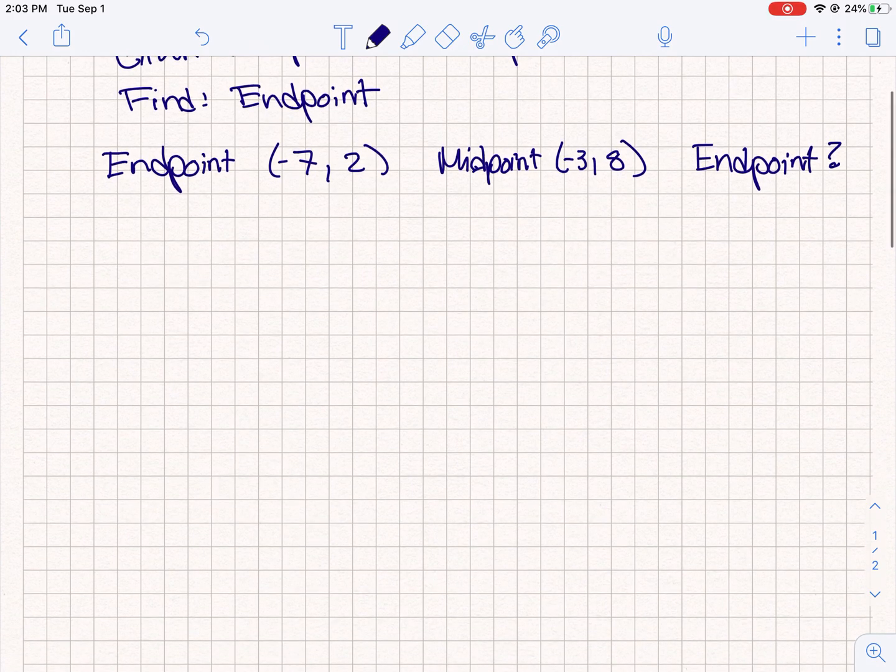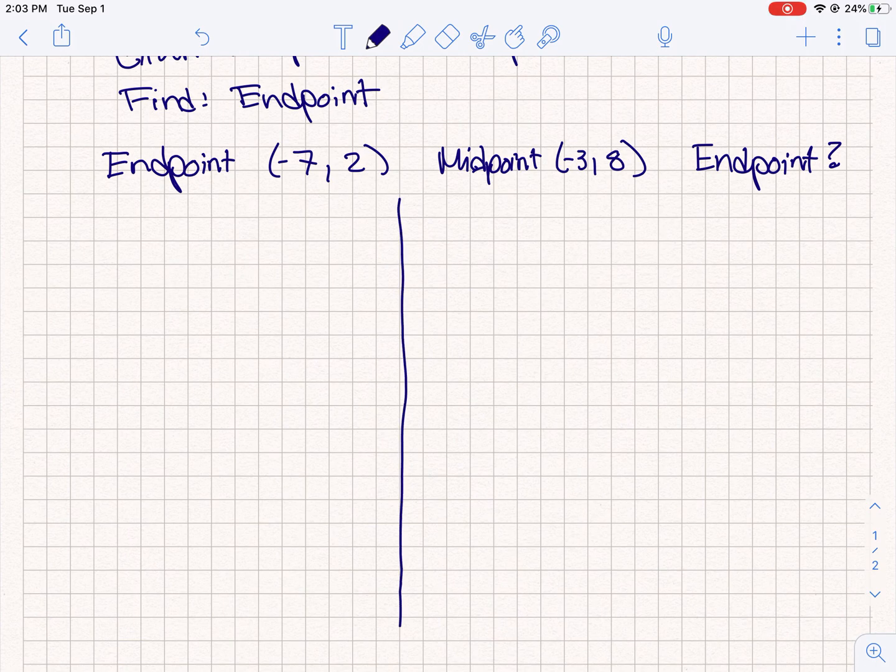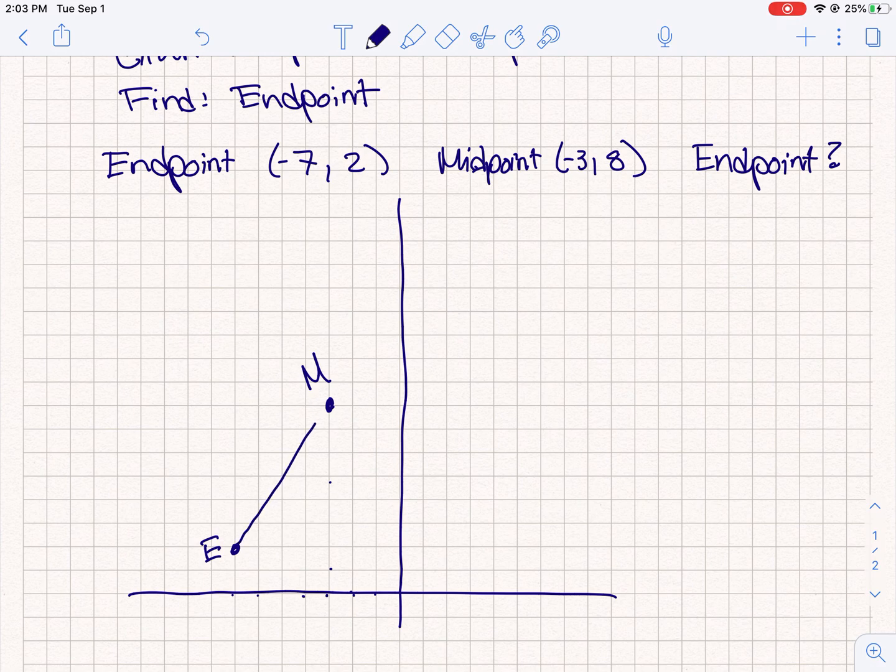So to start with, I'm going to graph this problem here. So we're given (-7, 2) as an endpoint. Our midpoint is (-3, 8) and then I want to find wherever this other endpoint is going to be at.